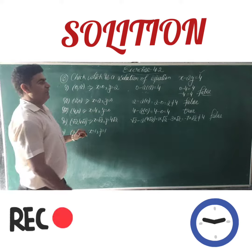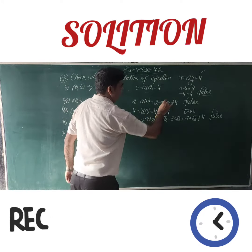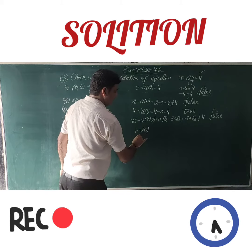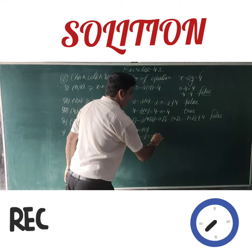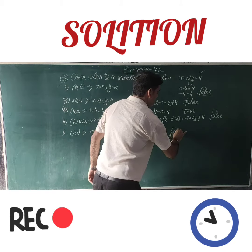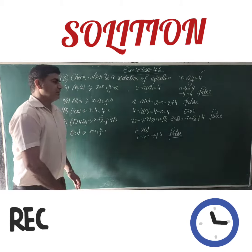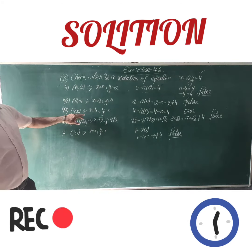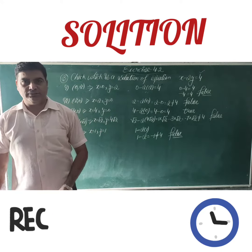The last point: both x and y equal 1. Replacing x by 1 and y by 1: 1 minus 2 times 1 equals minus 1, which is not equal to 4. So this is also a false case. Out of all five points, only (4, 0) is a solution, and all others are not solutions.